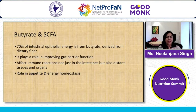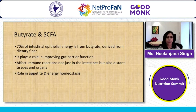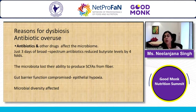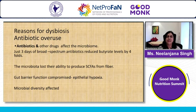Butyrate plays many important roles — improving gut barrier function, affecting immune reactions, and influencing distant organs and tissues. It has a role in appetite and energy homeostasis, and 70% of epithelial energy comes from butyrate. A major cause of dysbiosis is antibiotic overuse — just three days of broad-spectrum antibiotics can reduce butyrate levels fourfold, reduce the ability to form short-chain fatty acids from fiber, compromise gut barrier function, and affect microbial diversity.